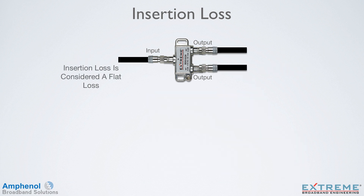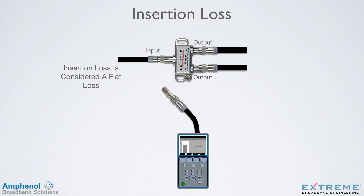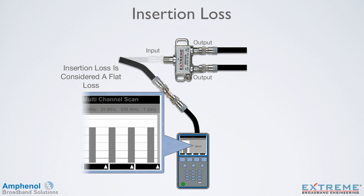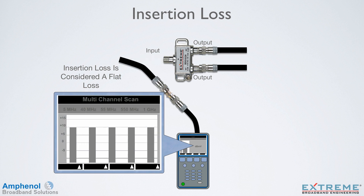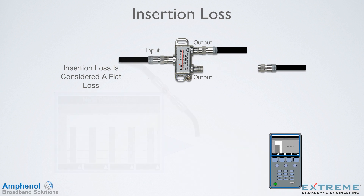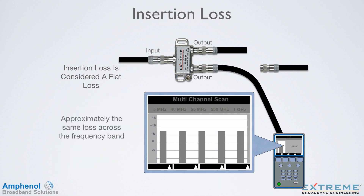Insertion loss is considered a flat loss, where the loss at any frequency across the rated range of 5 to 1,002 MHz is about the same. Let's measure several channels from the low to the high end of the frequency band — we'll use 5, 40, 55, 550, and 1,000 MHz. Here, each channel measures 10 dBmV. Next, we'll measure the output. Now each frequency is measuring 6.5 dBmV for a loss at each frequency of 3.5 dB, so at each frequency we have approximately the same loss.